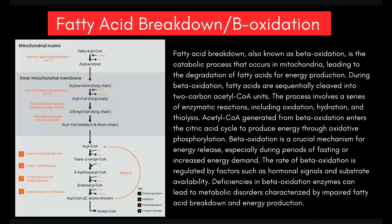Moving on to fatty acid breakdown — also known as beta oxidation — this is the catabolic process that occurs in mitochondria, leading to the degradation of fatty acids for energy production. During beta oxidation, fatty acids are sequentially cleaved into two-carbon acetyl-CoA units. The process involves a series of enzymatic reactions including oxidation, hydration, and thiolysis.